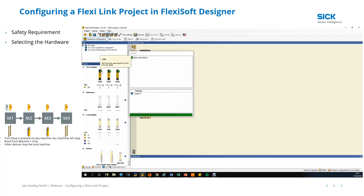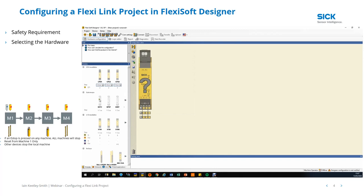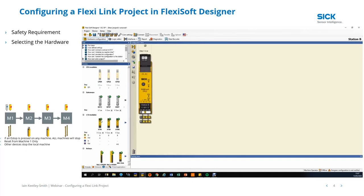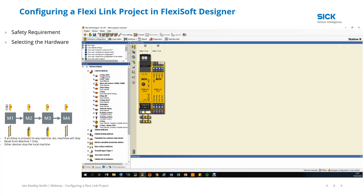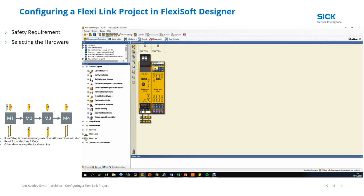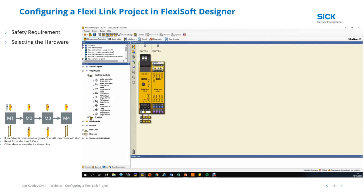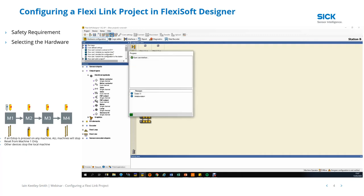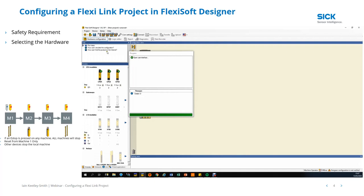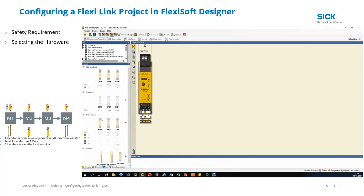We now go to machine two, Station B. Again we select CPU 1 with an XTIO, add a dual channel e-stop on inputs 1 and 2 with test policies on X1 and X2, a safety gate on inputs 3 and 4, and a motor on Q1 and lamp on Q2. Moving on to machine three — even though machines two and three are identical in hardware, it's not currently possible to copy and paste from one station configuration to another, so we have to repeat the process.